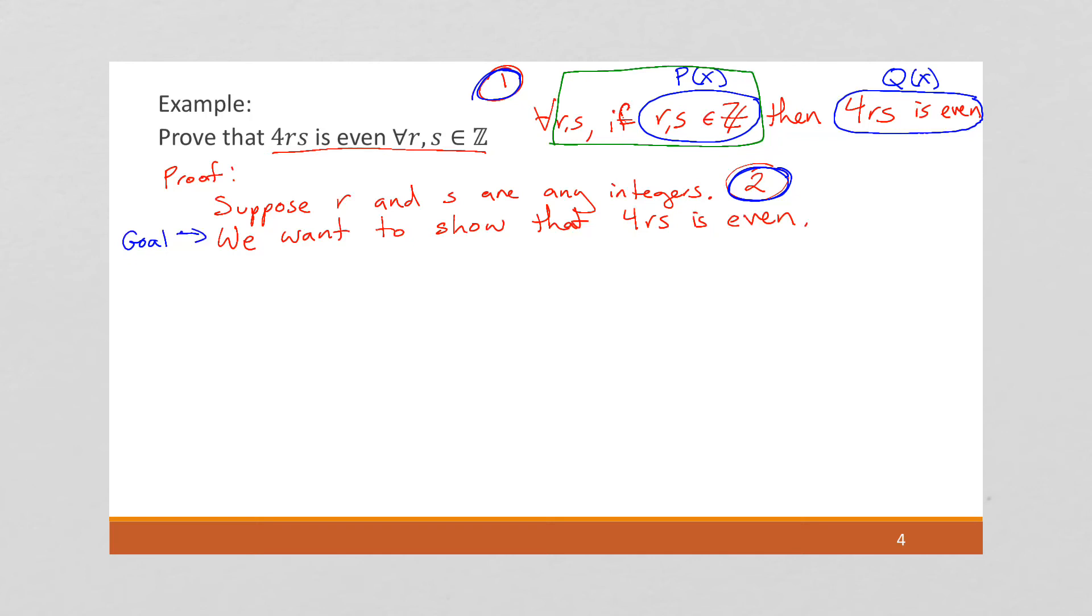So what does it mean for 4rs to be even? Well, it means I'm going to sort of rewrite this goal. We want to look at the definition of even, which is that it equals two times some integer k.